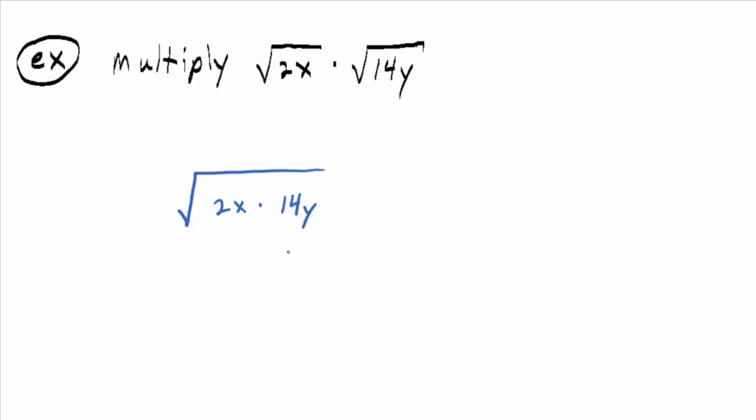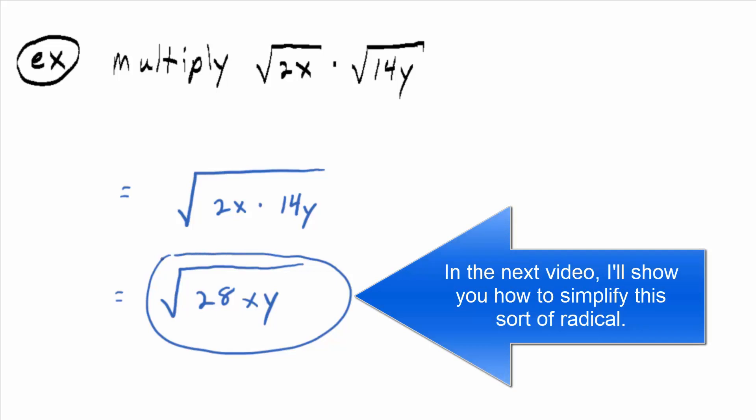So we can't multiply, other than writing the multiplication down, we can't multiply x times y, but we can multiply the two times the 14, right? So how does that simplify? The square root of 28xy. Right, couldn't be much easier. I mean, how else would you want to multiply it?